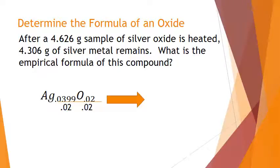And when you do that, you should find that you get exactly two silvers and you get exactly one oxygen. If these did not work out to be whole numbers, we would simply multiply until we got them to be whole numbers. And at that point, we would have our empirical formula.